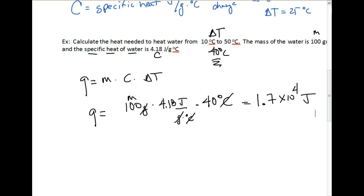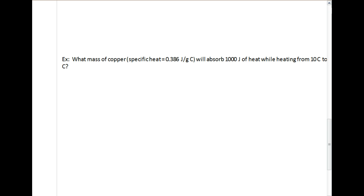Let's look at a curveball they can throw us on the next problem. What we're being asked is: what mass of copper (specific heat of 0.386) will absorb about 1,000 joules of heat while heating from 10 degrees Celsius to 15 degrees Celsius? Let's use our formula, Q equals m C delta T, and identify our variables. They're giving us a specific heat, there's our C value. It will absorb 1,000 joules of heat, so that's Q. And it's heating from 10 degrees Celsius to 15 degrees Celsius, so this is our delta T value.